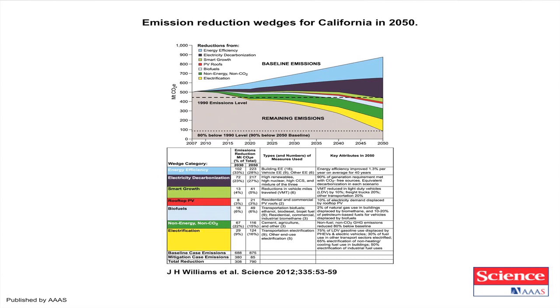The approaches being looked at — this is for California, but there's a similar model for the world — California is going to try to get from 500 million tons of CO2 the state's putting out today, instead of following business as usual and going up to 1 billion tons a year, down to 100 million tons of CO2 a year by implementing smart growth, decarbonization, biofuels, and these sorts of things.